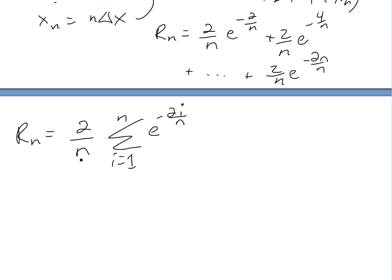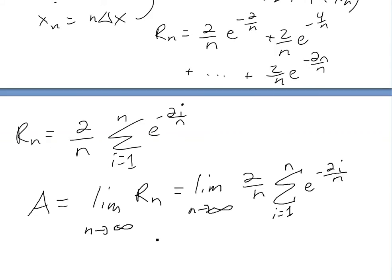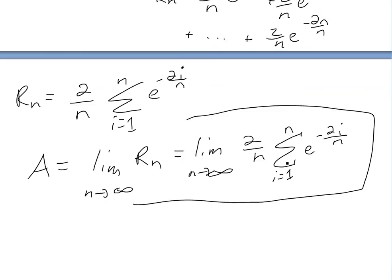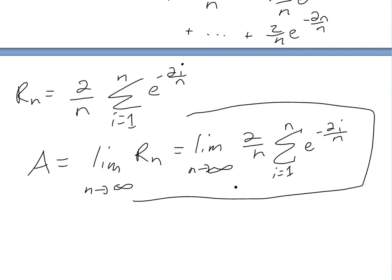Then the area is just going to be the limit as n goes to infinity of Rn. So area equals the limit as n approaches infinity of Rn, and we plug it in — and that's our answer to part A. We're not asked to evaluate it, because it's pretty hard to evaluate by hand unless you use integral methods, which I will show in later videos.